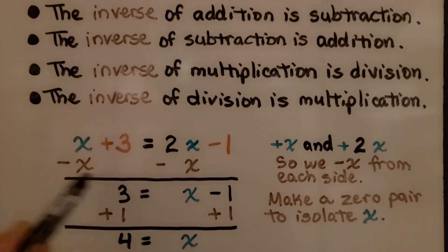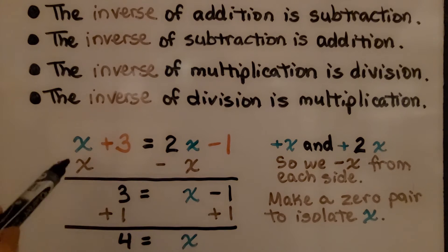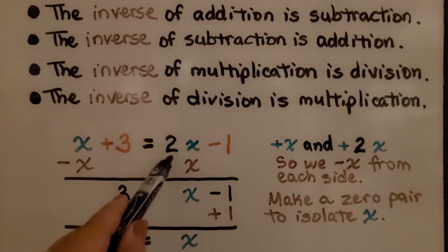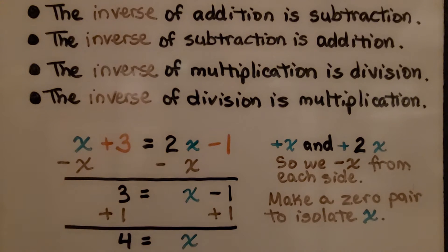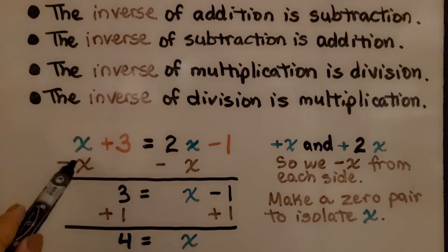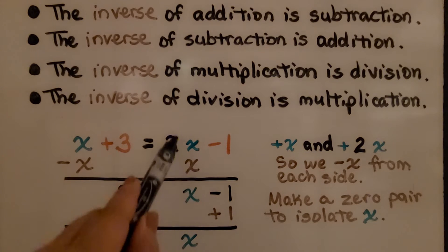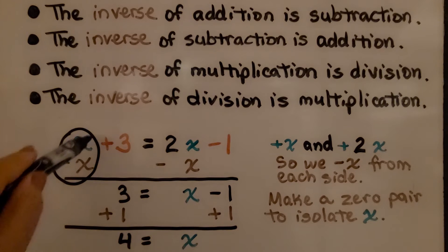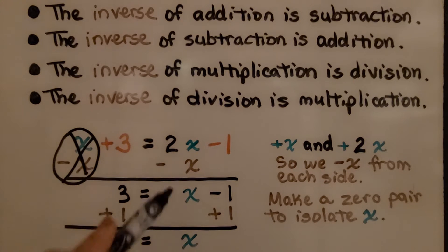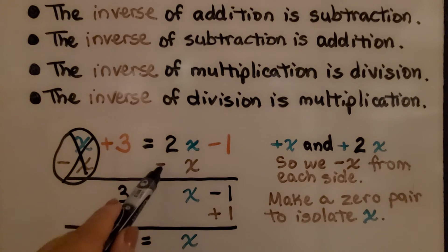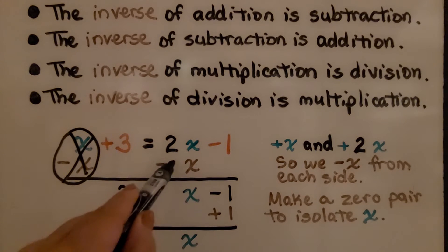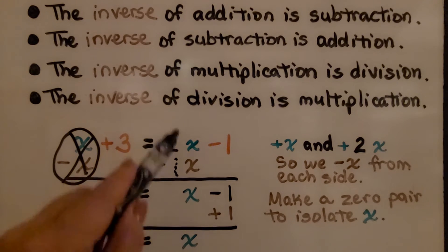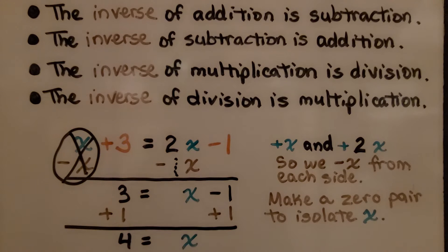We look and see that our variable term here is x, and here is 2x. To isolate the variable term to one side of the equal sign, we could subtract an x from this positive x and subtract an x from this 2x. This is going to make a zero pair — we have a plus x minus x and we're going to eliminate it. If we have two x's and we take away one x, because remember there's an invisible one there, we're going to end up with just an x.